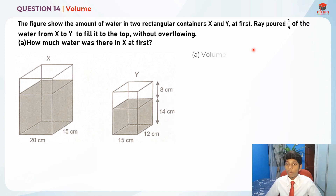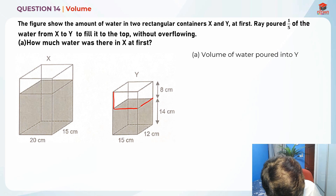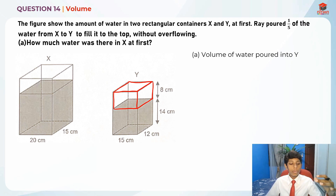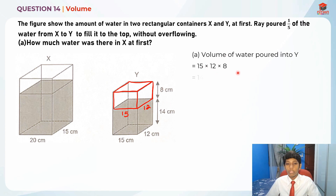First, what do we already know? The volume of water poured into Y. We can find this easily by taking 15 times 12 times 8. This is the amount of water needed to pour in order to fill Y to the brim without overflowing. So 15 times 12 times 8 gives us 1440 cm³.